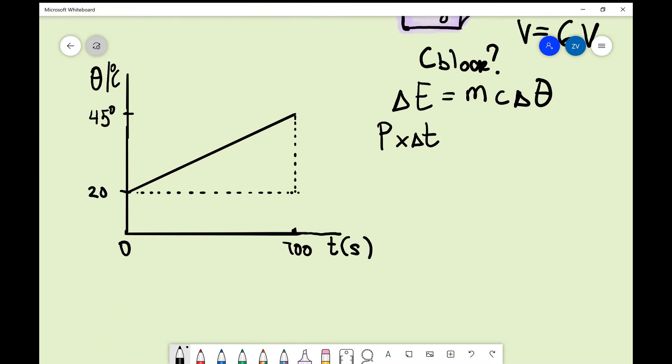Normally we don't write this delta because we just assume that at some point t is equal to zero, such as the start of this graph. But just for this example, I'm going to write this and you'll see why that is the case in a minute. So power times time is equal to mc delta theta.